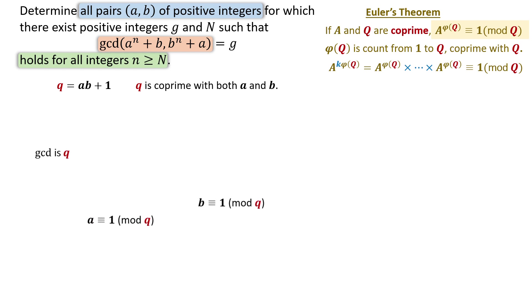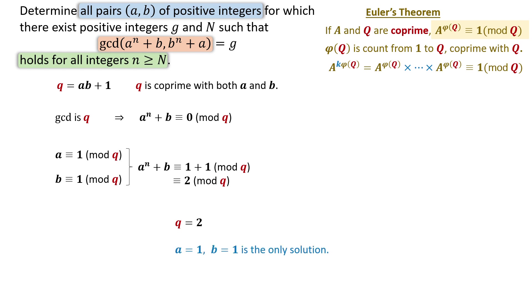Now we have every information to get the answer. Both a and b equals 1 mod q. Then a to the n plus b equals 2 mod q. Since q is also the gcd, q divides this expression. This is only possible if q is 1 or 2. But since q equals a b plus 1, and a and b are positive, q must be 2. This leads us to conclude that a must be 1 and b must be 1, which is the solution.